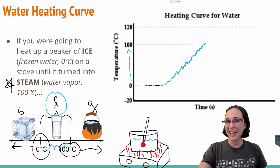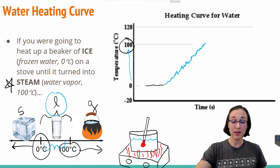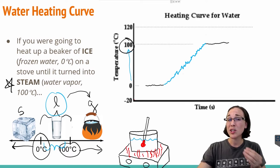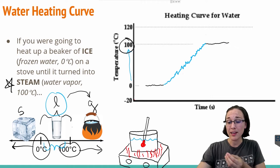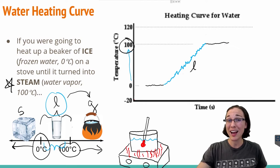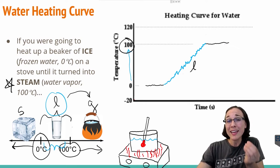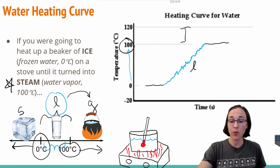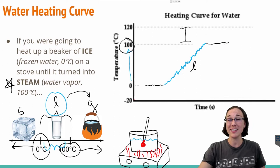Now what happens once it gets to 100 degrees Celsius? We know at that point it goes from a liquid to a gas. So there would be a horizontal plateau here because it's going from a liquid to a gas state. It's impossible for liquid water to get hotter than 100 degrees Celsius — you literally cannot have liquid water between 100 and 120 degrees Celsius. It doesn't exist.